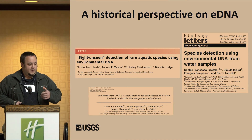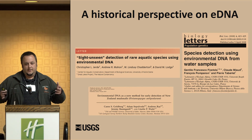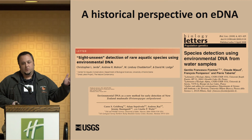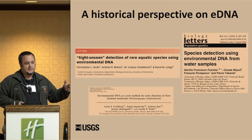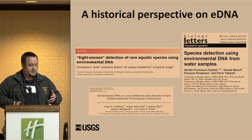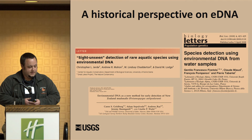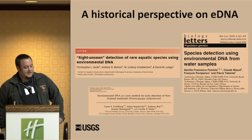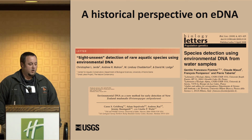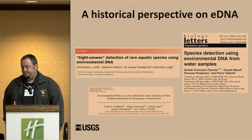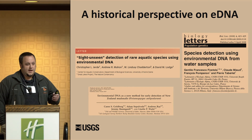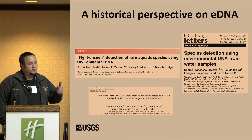Then the Asian carp problem started getting a lot of press, and people said the eDNA method used to detect bullfrogs in France seemed pretty cool — let's see if we can do something with Asian carp. In 2011, the paper 'Sight Unseen' was published, using environmental DNA to detect Asian carp in the Chicago area waterway system. This was really big, exciting news — except it was also a huge problem.